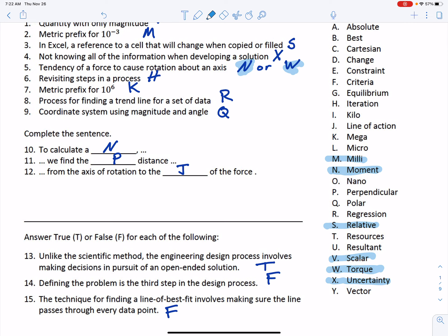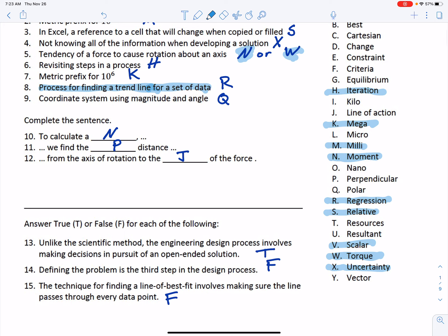Revisiting steps in a process, again Oakes and Leone, that is iterating. A metric prefix for 10 to the 6, that's mega, which is item K. Process for finding a trend line from a set of data—okay, so a trend line, there's different ways you can do trend lines, there's a linear regression, there's a way of doing an exponential fit, but all these are called regressions because it's a statistical term. You'll learn more about it as you go through the curriculum, but you should know that name. Finding a trend line is called the process of regression.